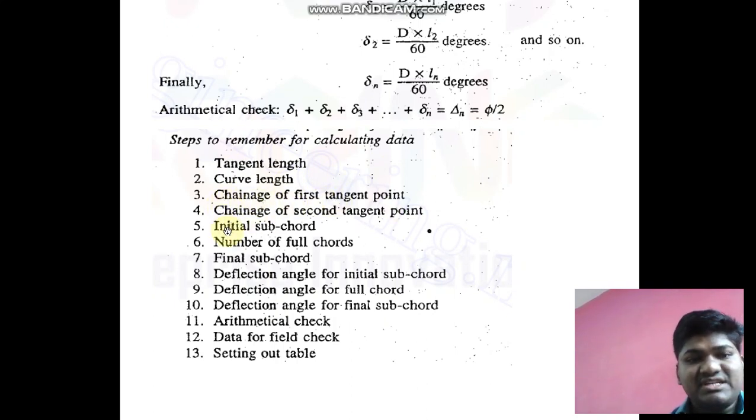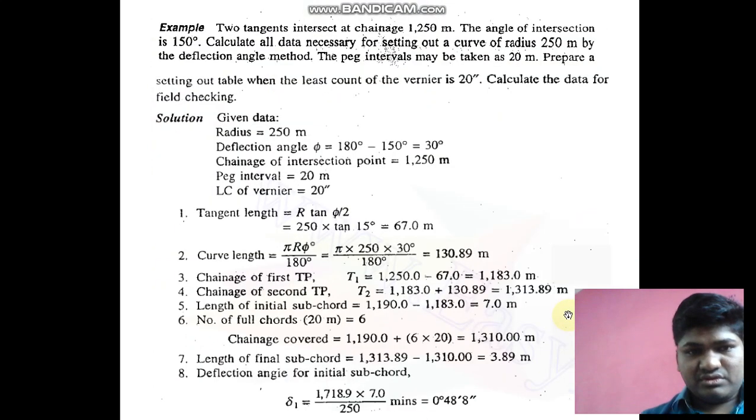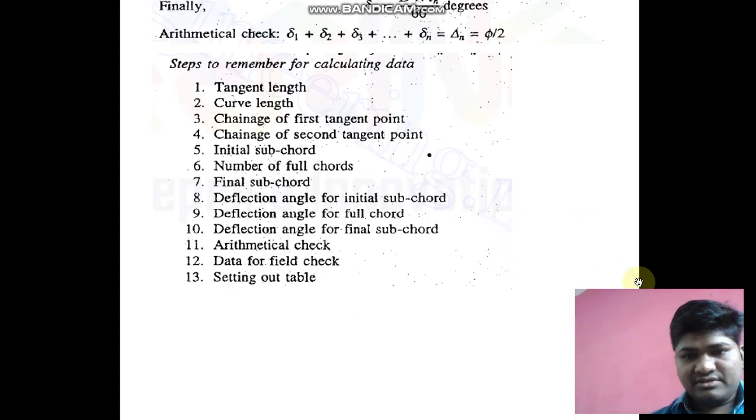First is tangent length, second is curve length, next is chainage of first tangent point, chainage of second tangent point, initial sub-chord, number of full chords, final sub-chord, deflection angle for initial sub-chord, deflection angle for full chord, deflection angle for final sub-chord, arithmetical check, data for field check, and setting out table. This setting out table is very important. I'll explain the setting out table in the next video. So that's it for today, thank you.